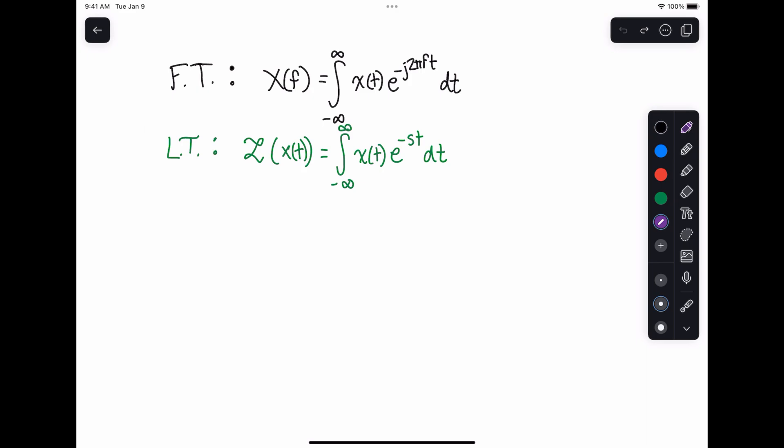Now, when I write them both together, and here's just a standard Fourier transform of a function x of t going to x of f, and I write the Laplace transform, and notice how this is the bilateral Laplace transform, so this is going from minus infinity to positive infinity.